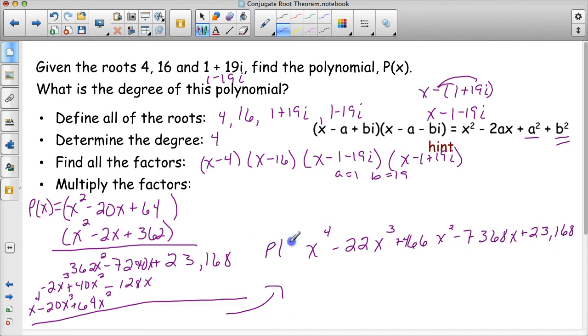This is p of x with the roots 4, 16, 1 plus 19i, and 1 minus 19i. Now if I graph this, how many times would this cross the x-axis? I'm waiting for you. Write it down. And how do you know? Think about that. Those are questions we're going to talk about in class.